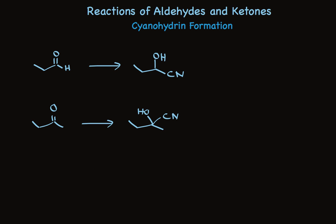You can make compounds called cyanohydrins by directly adding cyanide to the carbonyl group. You make this happen using sodium cyanide together with an acid, such as HCl.